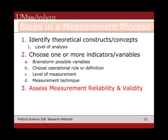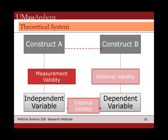We've been talking in the past few lectures about various steps in the measurement process. The third step, after we've identified our theoretical constructs and chosen the actual indicators or variables we're going to use to measure that construct, is to assess measurement reliability and validity. If we go back to the diagram of our theoretical system, measurement was the process used to link construct A to the independent variable and construct B to the dependent variable.